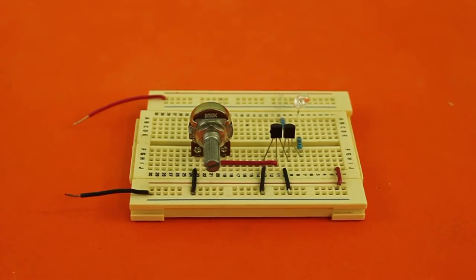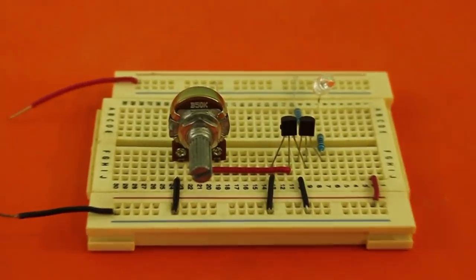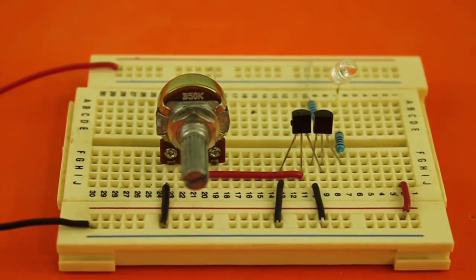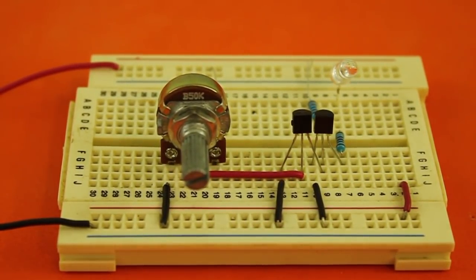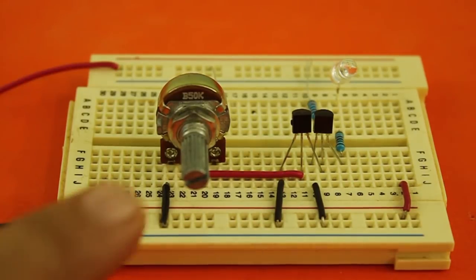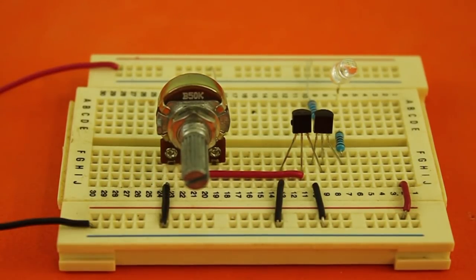Hello, welcome to Ludic Science. Today I will show you how to build this very simple circuit to monitor voltage. The circuit turns on an LED when the voltage drops below a certain value that we can adjust using this potentiometer. Very useful to check battery voltage for example.